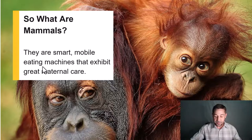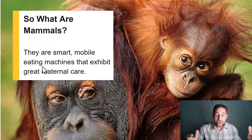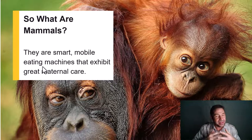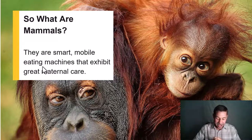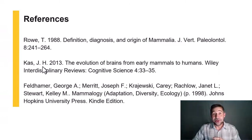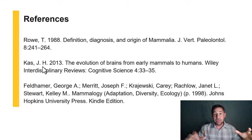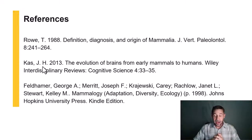In conclusion, when we talk about mammals, what do we mean? Mammals are smart — big brains — mobile eating machines that exhibit great maternal care. Lots of energy invested in our young, like this female orangutan and her babe. I look forward to joining you for lecture 1.2, when we discuss why we should even study mammals — the importance of mammalogy and the importance of mammals to ecosystems and to our lives. I appreciate your time and attention, and I'll see you next time. Cheers.